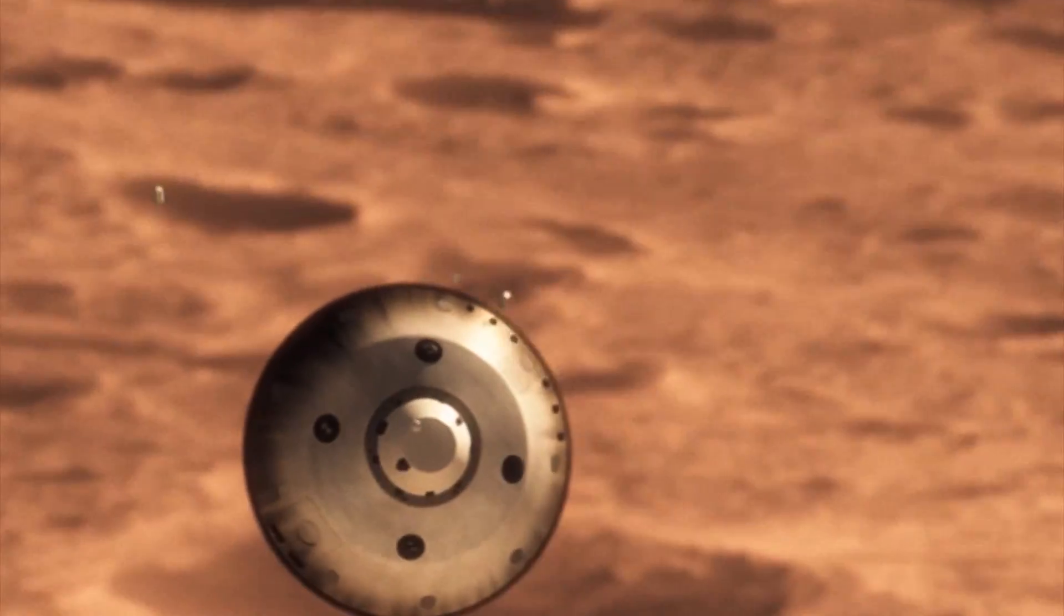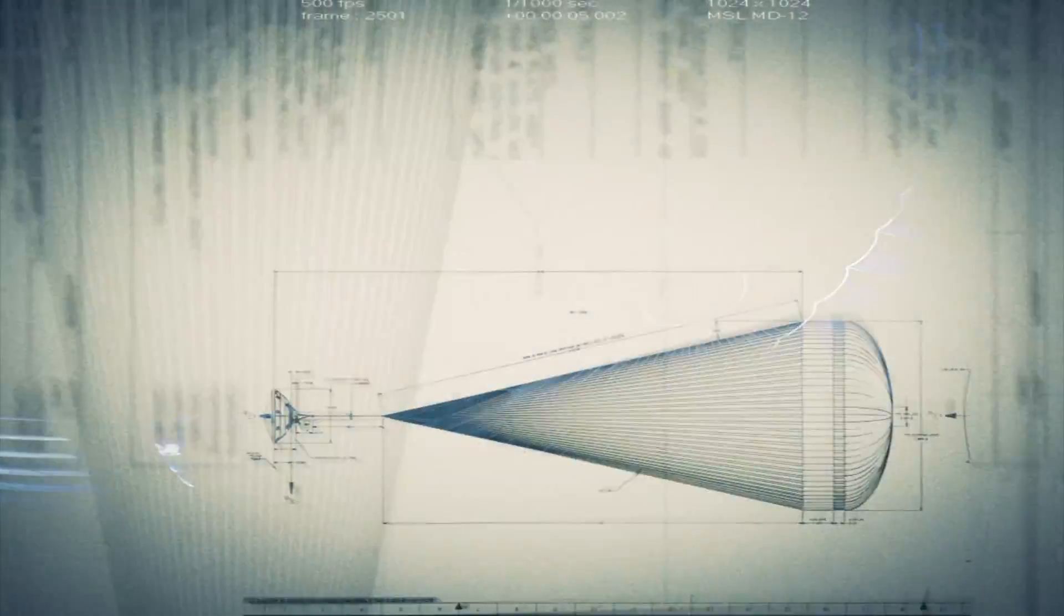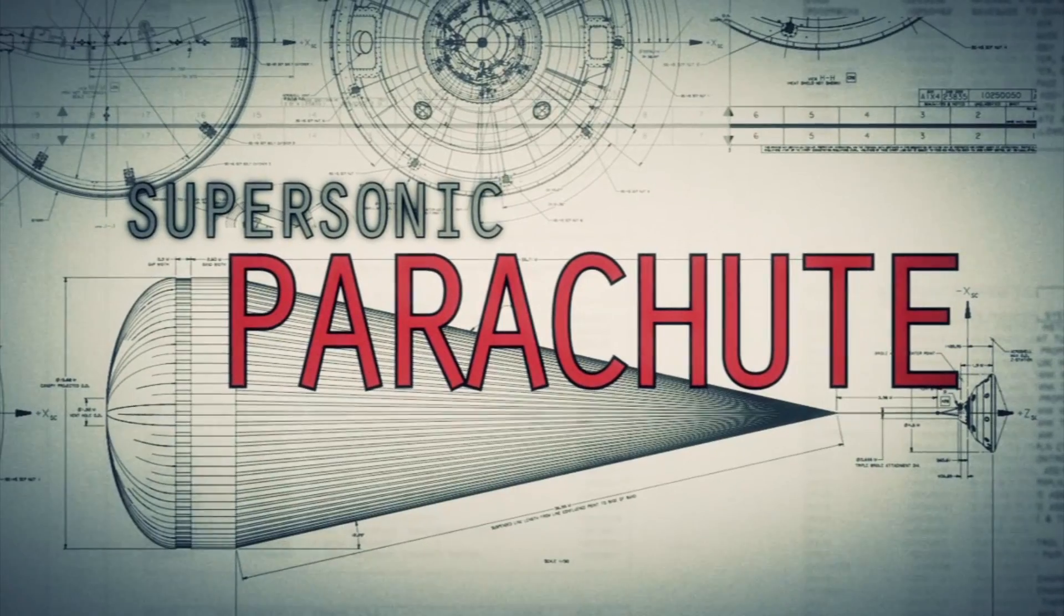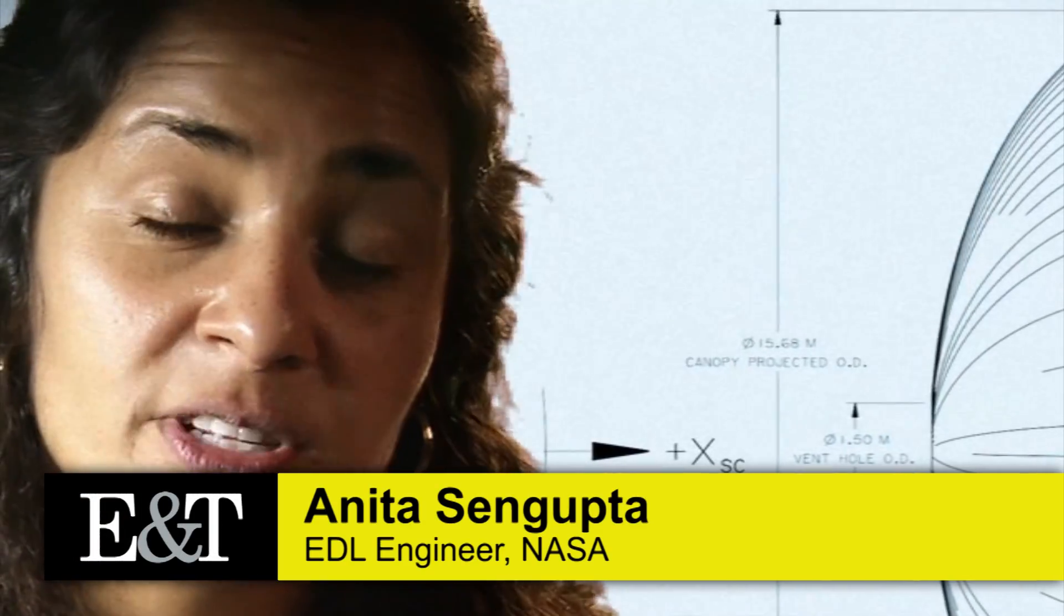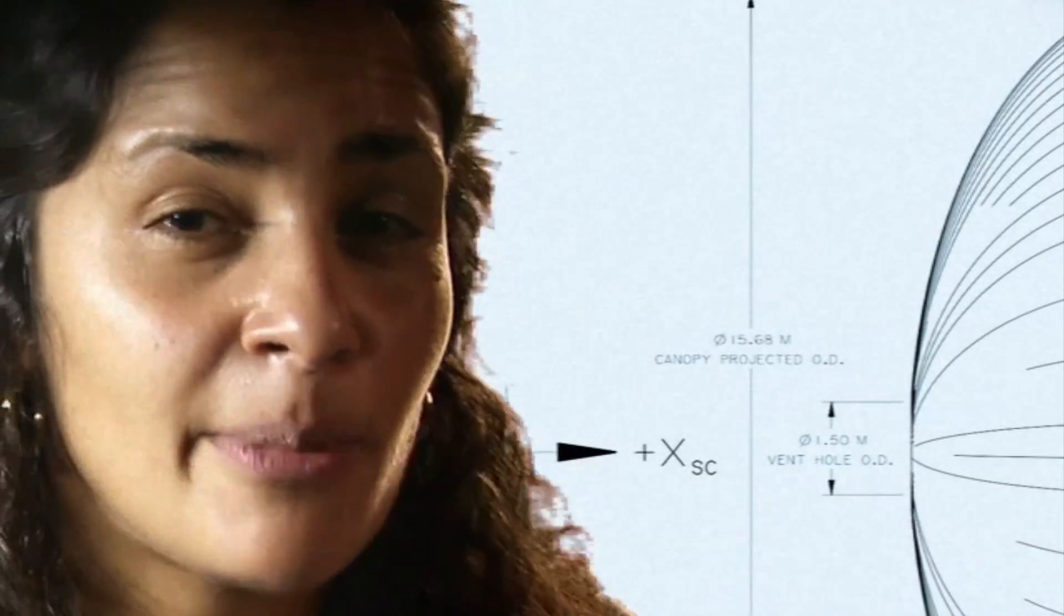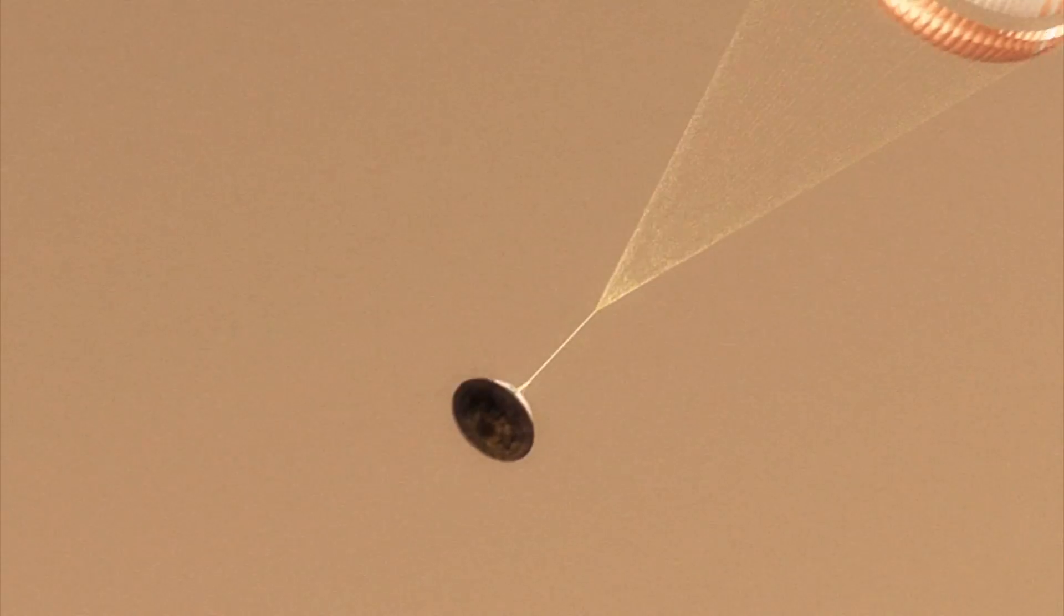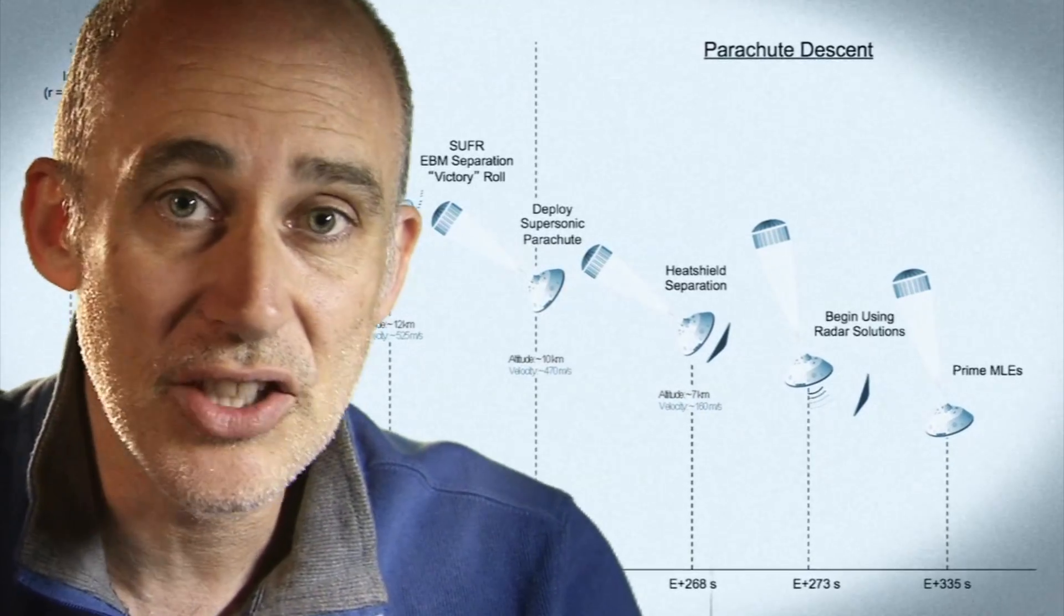We're still going about a thousand miles an hour, so at that point we use a parachute. The parachute is the largest and strongest supersonic parachute that we've ever built to date. It has to be able to withstand 65,000 pounds of force, even though the parachute itself only weighs about 100 pounds. When it opens up that fast, it's a neck-snapping nine Gs.